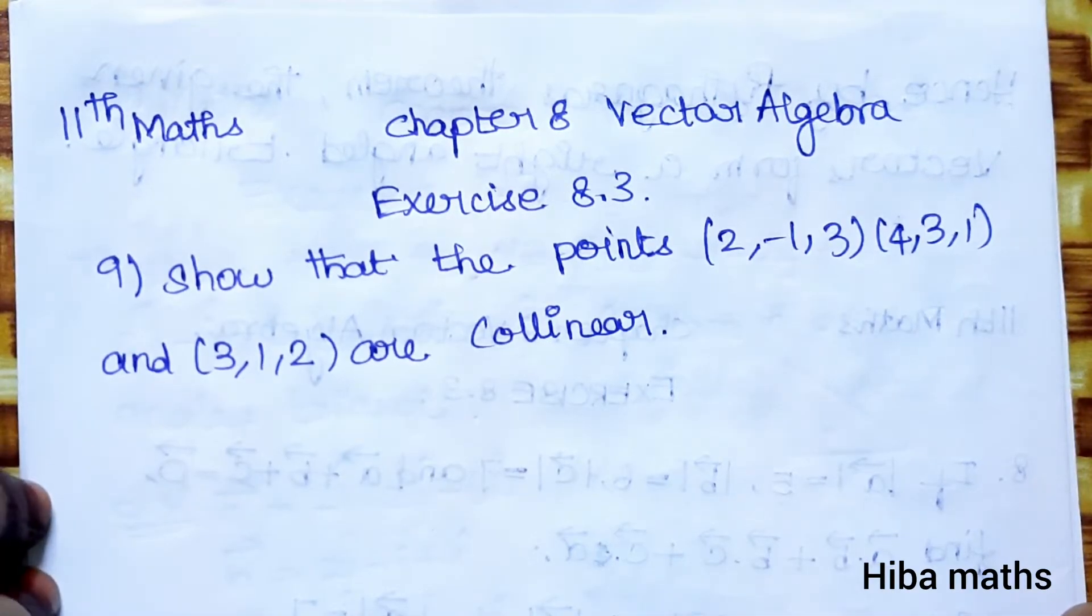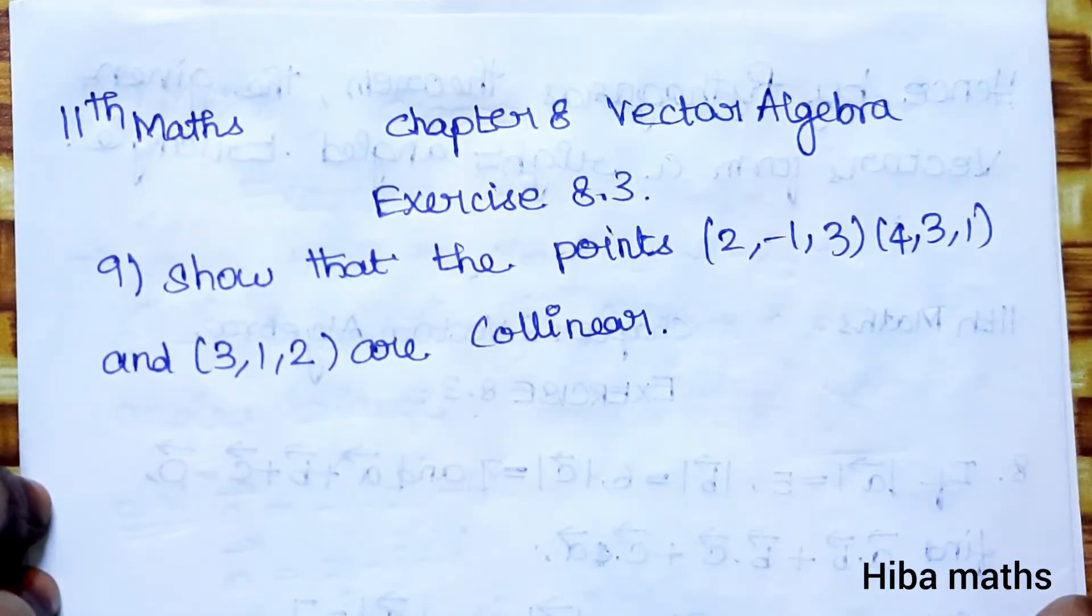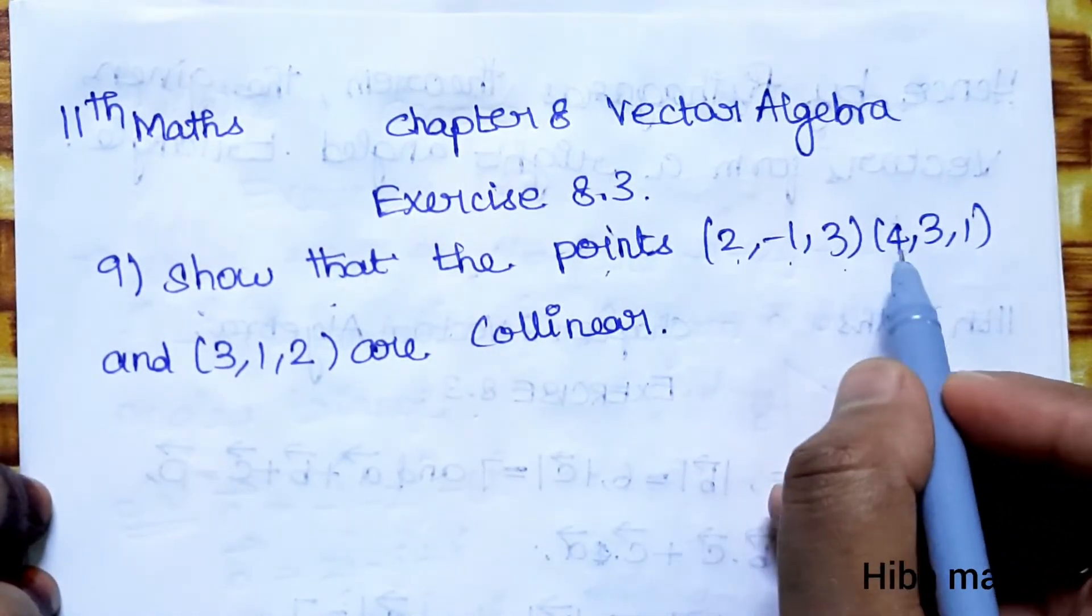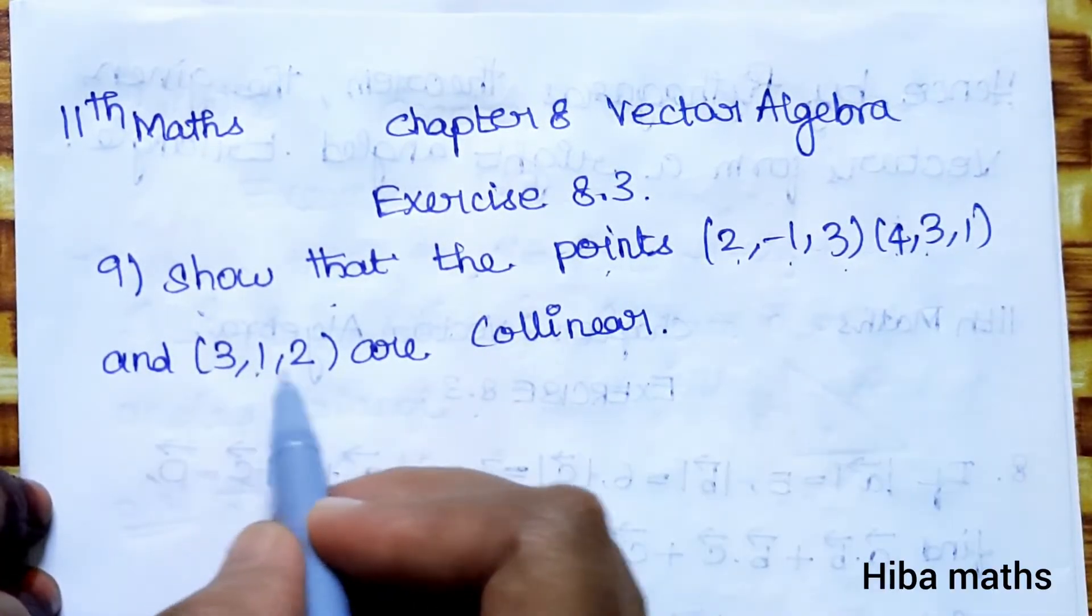Hello students, welcome to Hiba Maths. 11th standard maths, chapter 8 vector algebra, exercise 8.3, question 9. Show that the points (2, -1, 3), (4, 3, 1), and (3, 1, 2) are collinear.